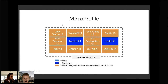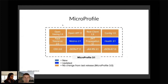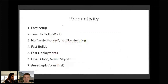This upper part — MicroProfile — iterates faster than the lower part, which is Jakarta EE. It's like an operating system with slower release cycles than the software running on top. I think it's a good thing that they are separated because loosely coupling, like microservices, means the release cycle of one is different from the other. From a user point of view, keeping them separated is fine.